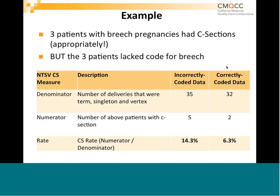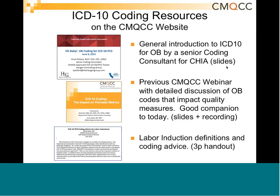Here's a simple example: if you do a repeat C-section and forget to code breech, or it doesn't get coded, you can change your rates quite significantly. This is an example where three missed cases change the rate from 6% to 14%. So we have to be vigilant here.